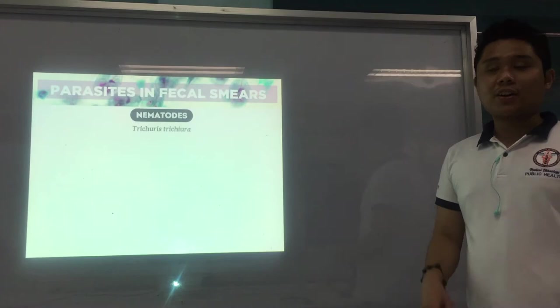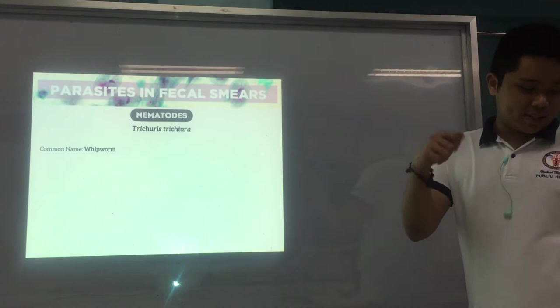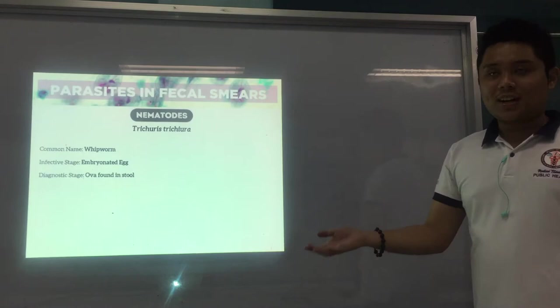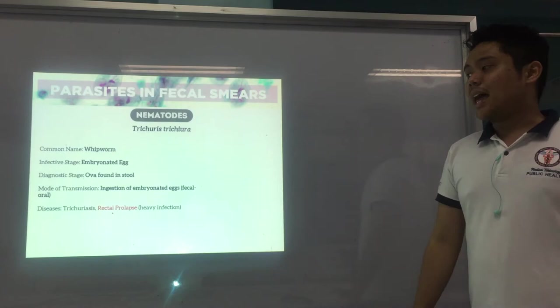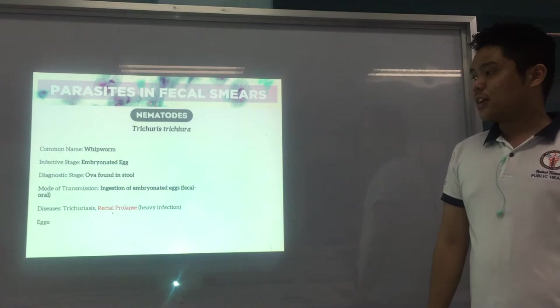Continuing, we have Trichuris trichiura. The common name is whipworm because it looks like a whip. The infective stage is the embryonated egg, the diagnostic stage is ova found in stool, mode of transmission is ingestion of the embryonated egg — fecal-oral — and the diseases are trichuriasis and rectal prolapse. We have a picture on that later.